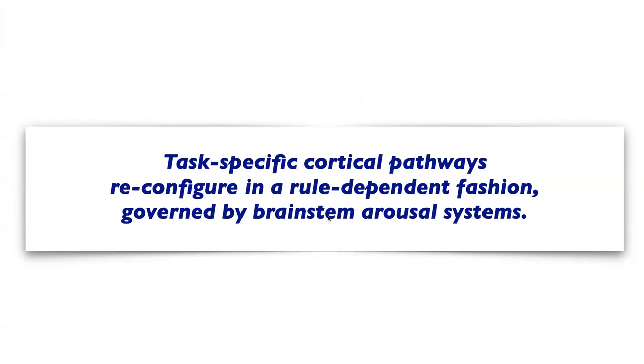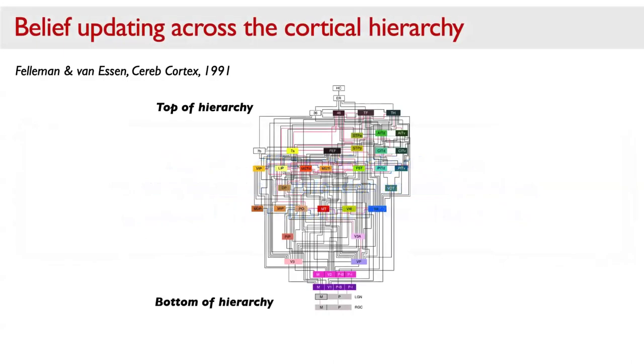I take this to be a possible index of some form of rapid plasticity that basically imprints a new sensory-motor association into the cortical circuitry. We would want to follow this up using pharmacological intervention — for instance, blocking certain noradrenaline receptors — to see if we still find that effect. To wrap up this part: task-specific cortical pathways seem to reconfigure in a rule-dependent, context-dependent fashion, and this is at least partly governed by brainstem arousal systems.